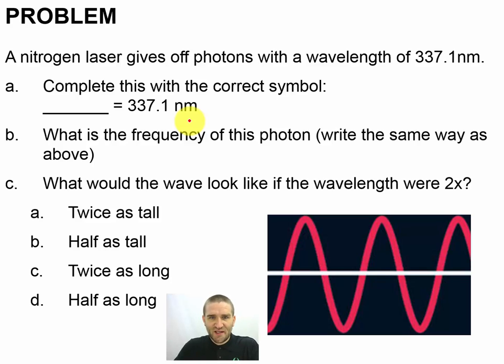Let's give that a try here. Wavelength is given by symbol lambda. Now, what's the frequency? Frequency is given by nu of this photon. We need a relationship that has lambda and nu in it. And the relationship for that will be speed of light equals lambda times nu.